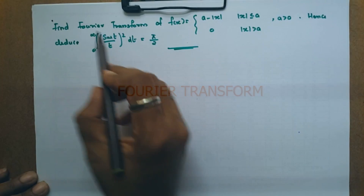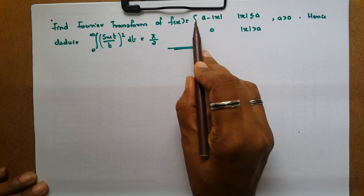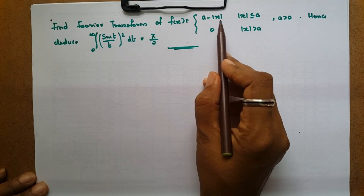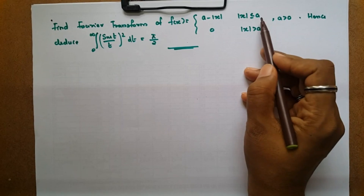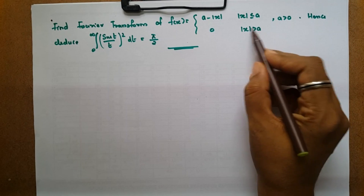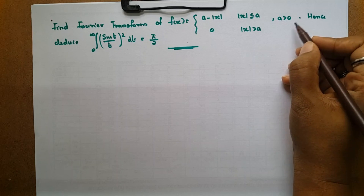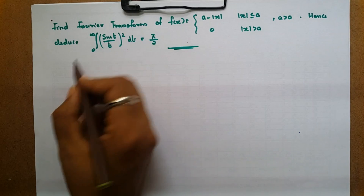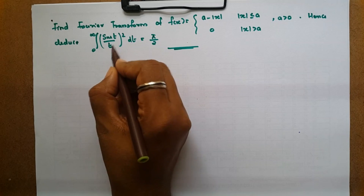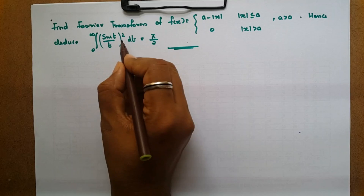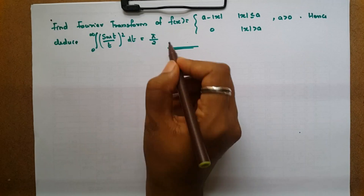Find the Fourier transform of f(x) = a - |x| for |x| ≤ a, and 0 for |x| > a, where a > 0. Hence deduce that the integral from 0 to infinity of (sin t / t)² dt is equal to π/2.